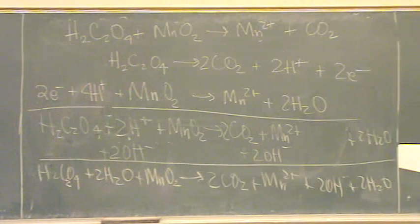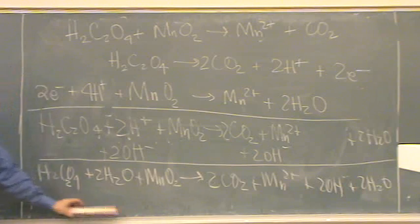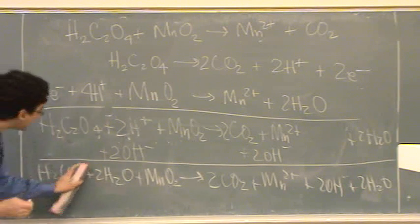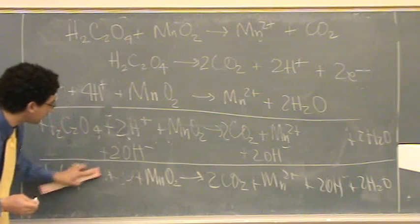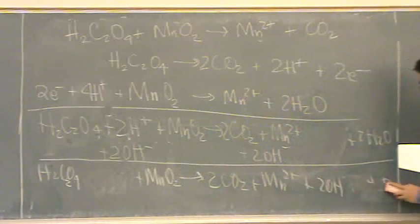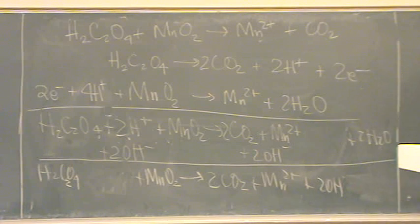Then after you do that, you want to see if there's any simplification possible. The waters, yeah. This actually looks like there's two waters on each side. I will just erase them because I have no more space. So get your eraser out, erase that, and then you're done. Is that good?